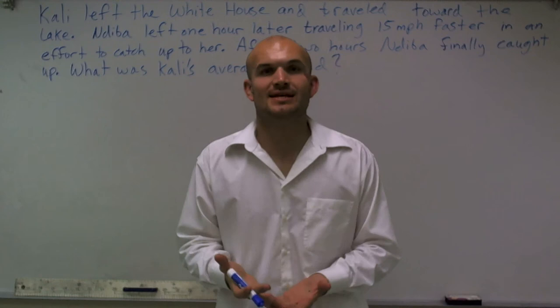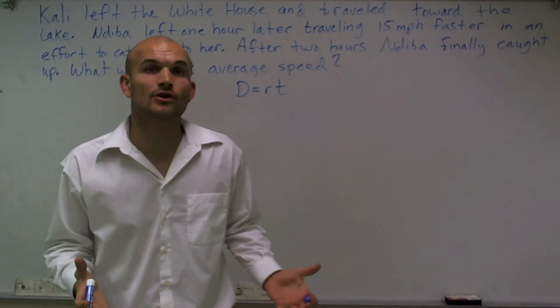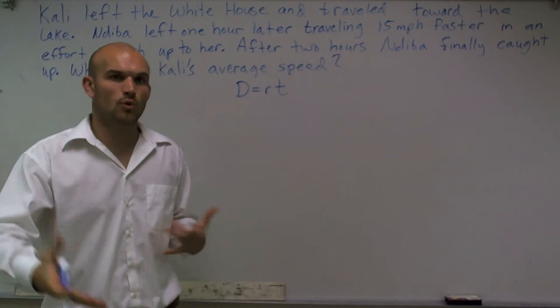A couple things I notice is I read off a lot of distance, rate, and time. So that automatically prompts me to use the equation distance equals rate times time. Now that I know I'm going to be using that formula, the next thing that's helpful is to draw a diagram to see what exactly has happened.